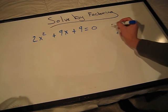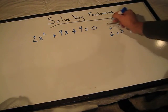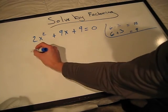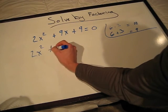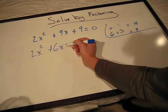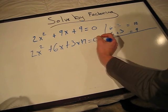So these two numbers are 6 and 3. Now, we'll rewrite our equation as 2x squared plus 6x plus 3x plus 9 equals 0.